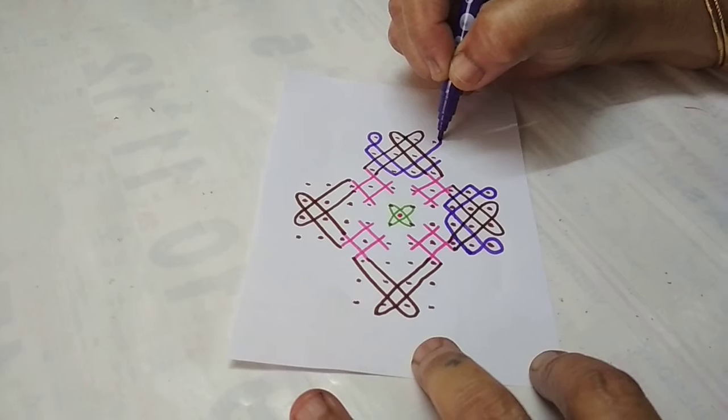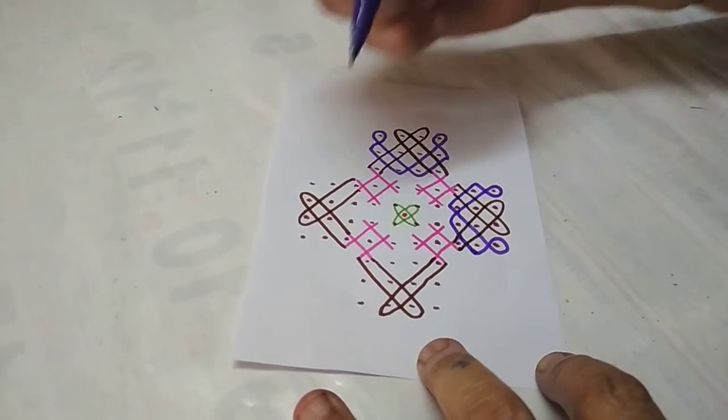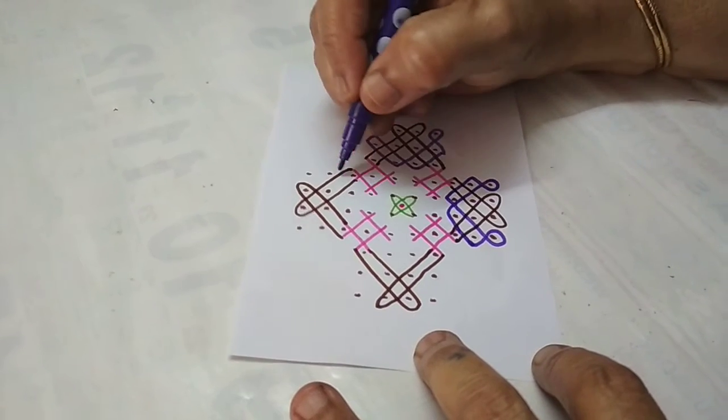Next we start growing 3 to 4 leaves. We start painting this.